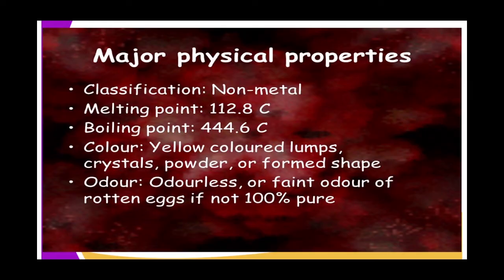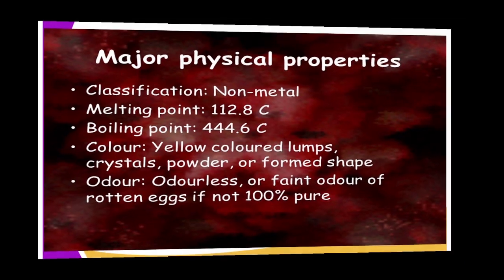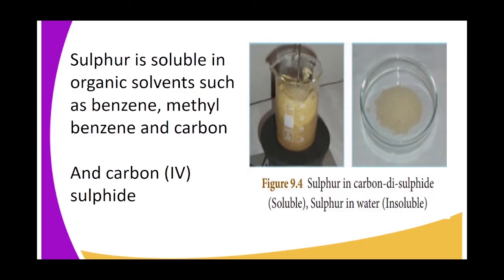Sulfur is yellow in color and exists in the form of crystals or powder. It is odorless, or has a faint odor of rotting if it is not 100% pure. Sulfur is soluble in organic solvents such as benzene, methylbenzene, and carbon disulfide, because they all exist in a molecular state — and as we know, sulfur also exists in a molecular state.